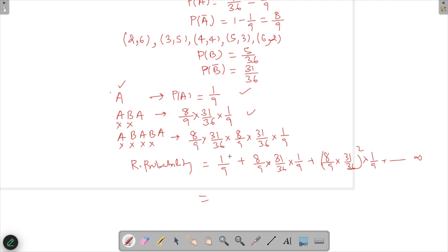This is an infinite GP whose first term is 1/9 while the common ratio is 8×31/(9×36). The sum is a/(1-r), which is 1/9 divided by [1 - 8×31/(9×36)], which equals 1/9 divided by (9×36 - 8×31)/(9×36).